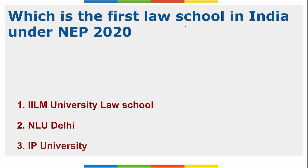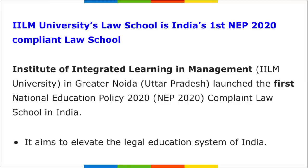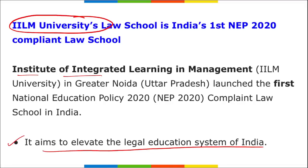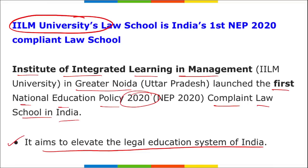Which is the first law school in India under the National Education Policy 2020? It is IILM University's Law School - the Institute of Integrated Learning and Management in Greater Noida - which launched the first NEP 2020-compliant law school in India. The aim is to develop the legal education system in India.